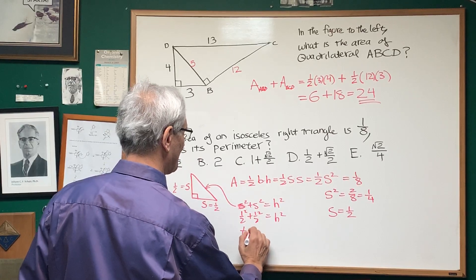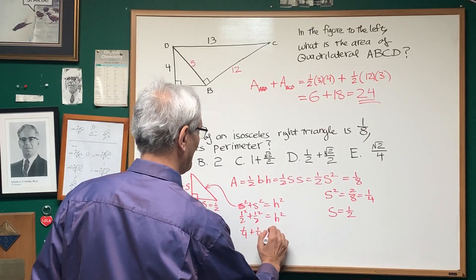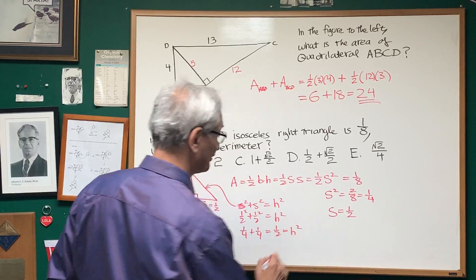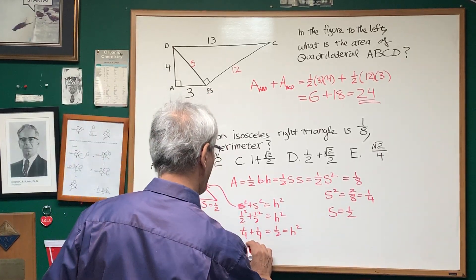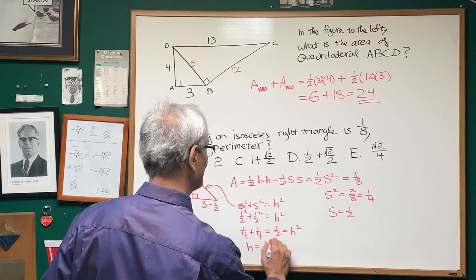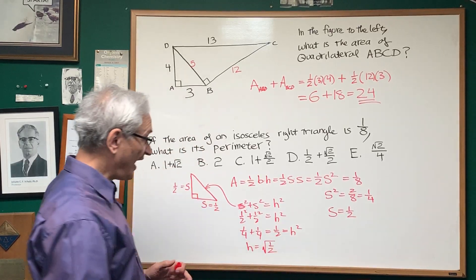That's one-quarter plus one-quarter, which is one-half, which is the hypotenuse squared. So, therefore, the length of the hypotenuse is equal to the square root of one-half.